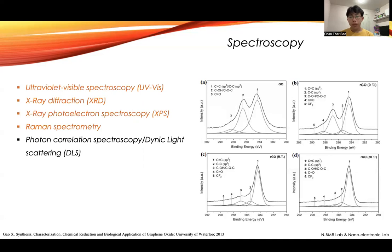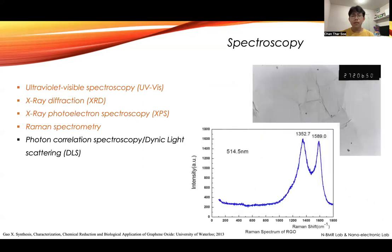The next one is Raman spectroscopy. Raman spectroscopy is similar to XPS, but what is different is that it gives information about the bond formation between elements, and also we can see the quality of the material. For example, this is a Raman spectrum — we can see what the state is, such as how much oxidation or oxygen functionalization has occurred on the graphene oxide, something like that. The quality of the material can be analyzed by Raman spectroscopy.